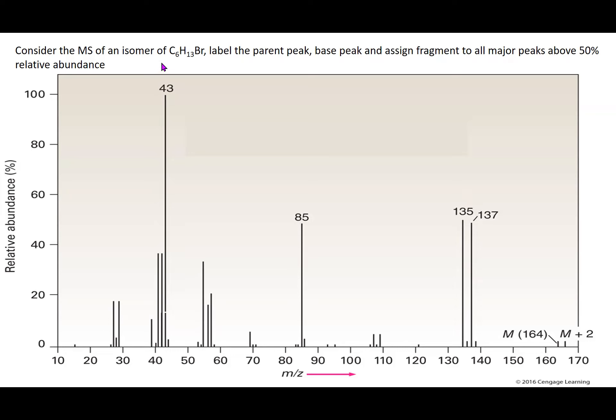Consider the mass spectrum of an isomer of C6H13Br. Label the parent peak, the base peak, and assign fragments to all major peaks above 50% relative abundance.